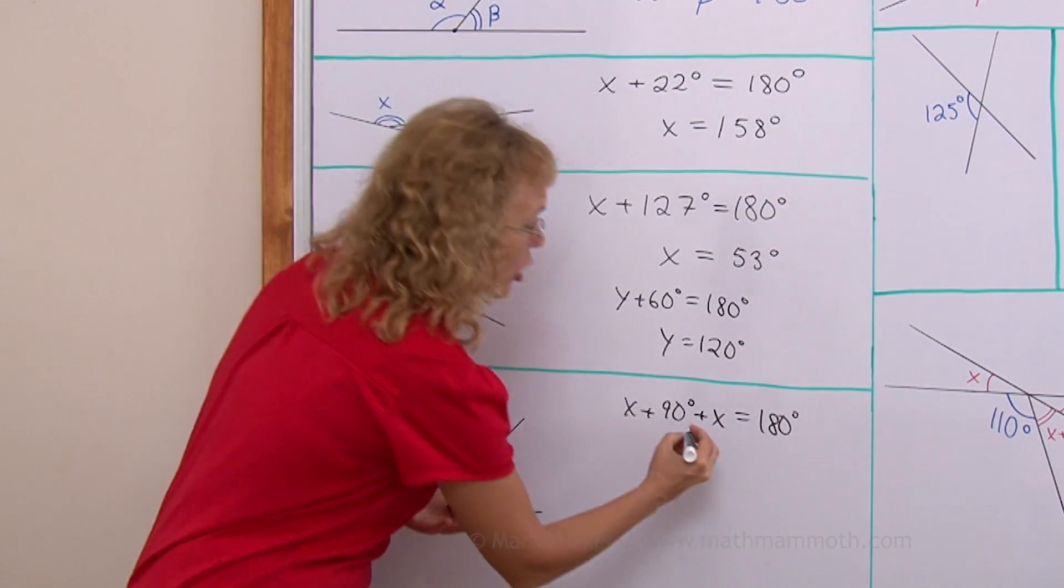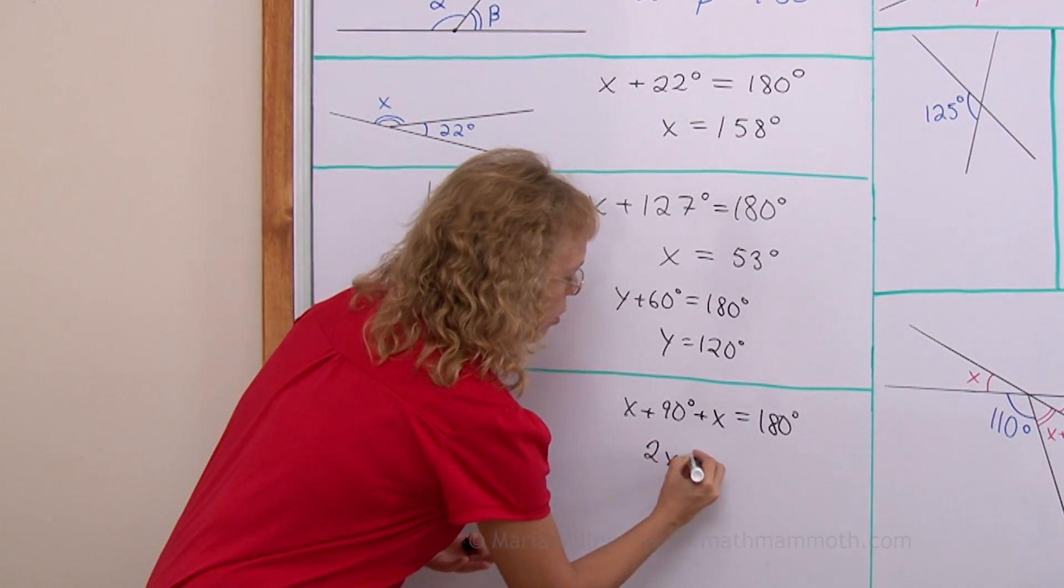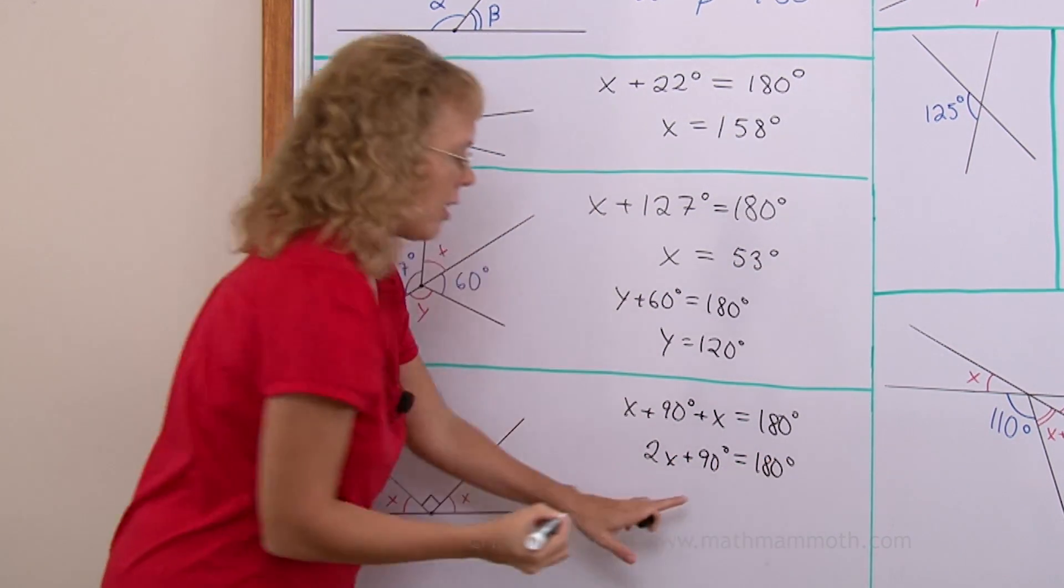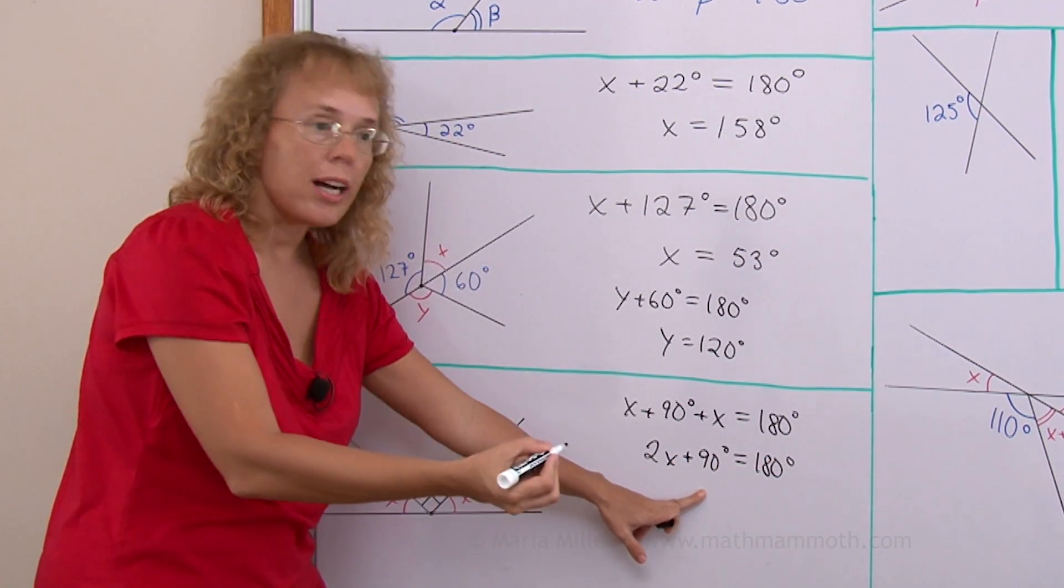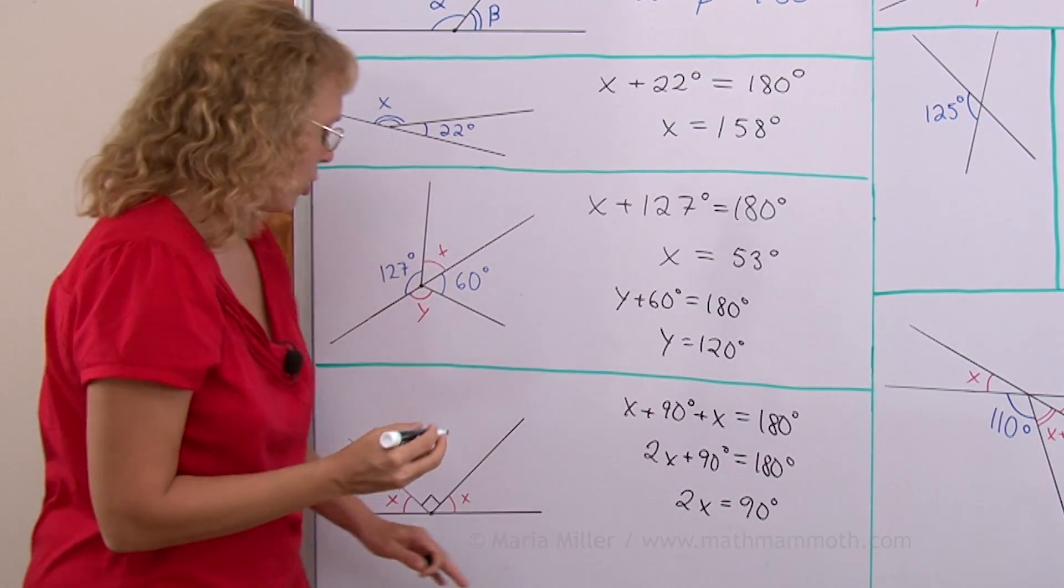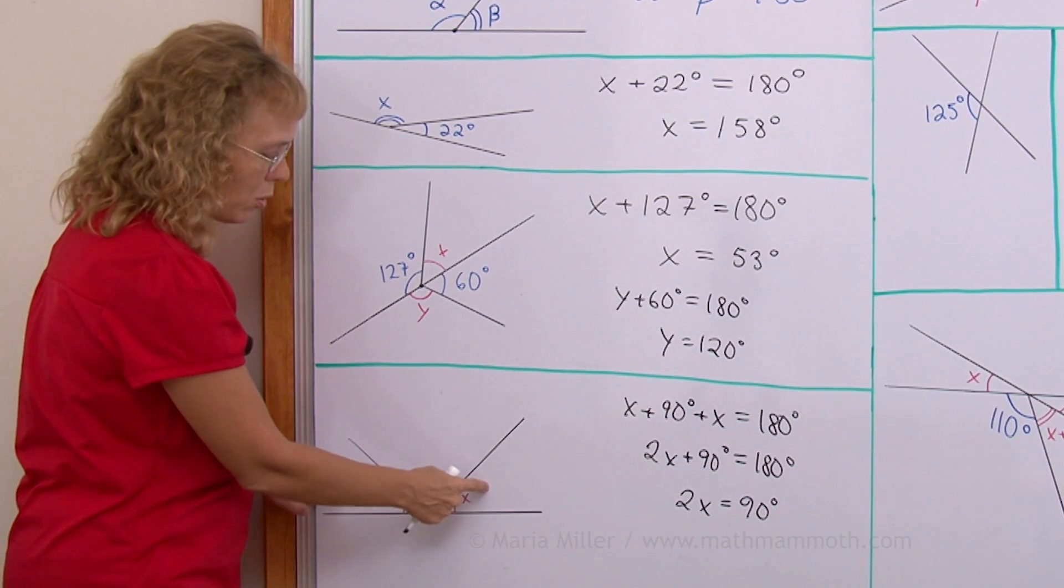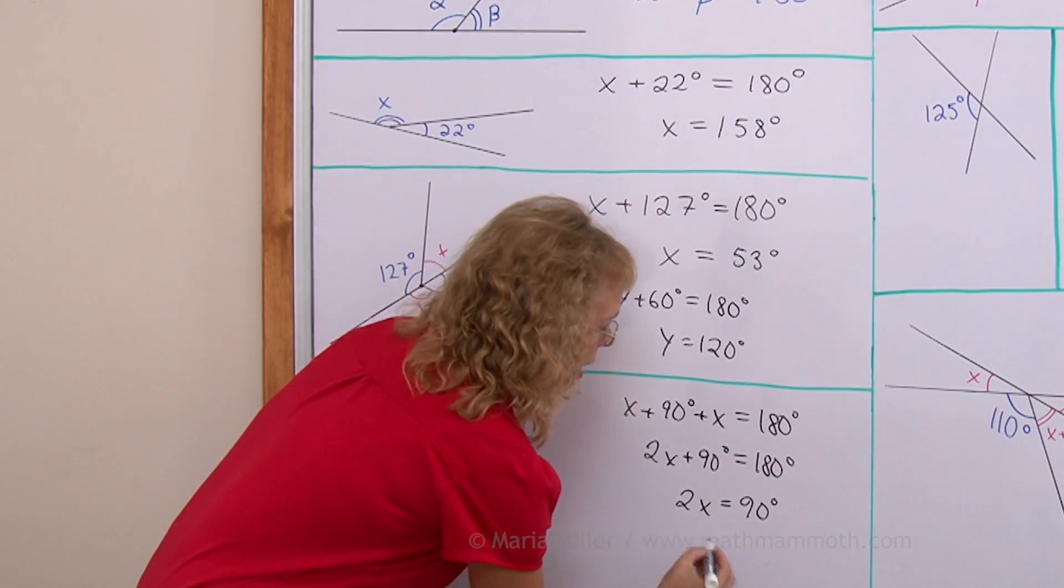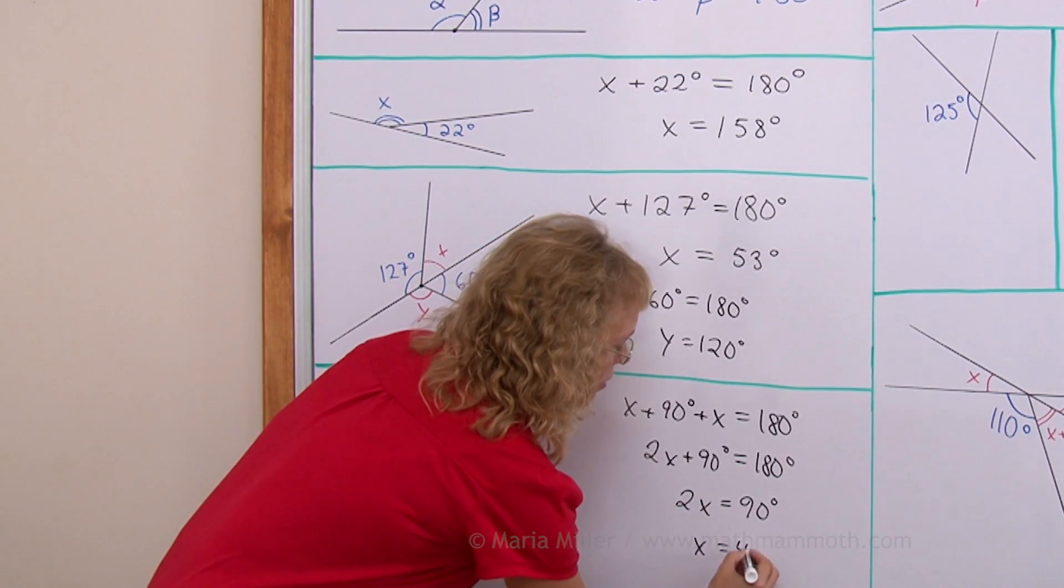2X and 90 equals 180. Now we subtract 90 from both sides. So we get 2X equals 90 degrees. Just what I told you a little bit ago that these two must add up to 90 degrees since here is 90. And then we take half of 90, X equals 45 degrees.